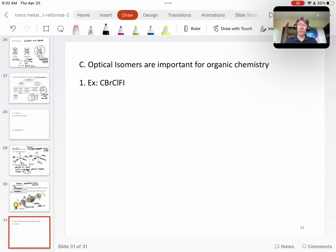Now, optical enantiomers are important for organic chemistry, and I'll give you one more example for organic chemistry, and this is probably the simplest example you can do.